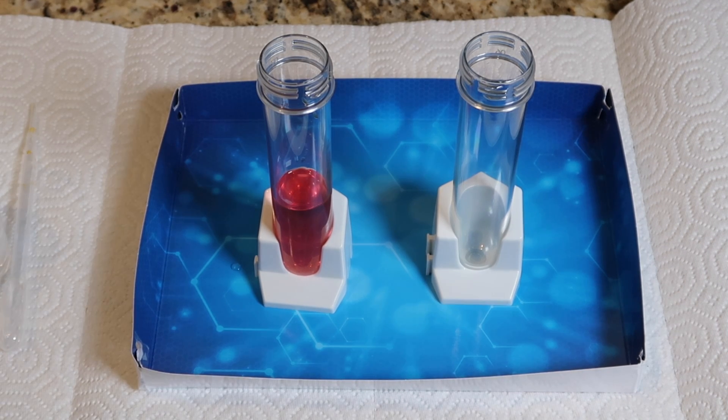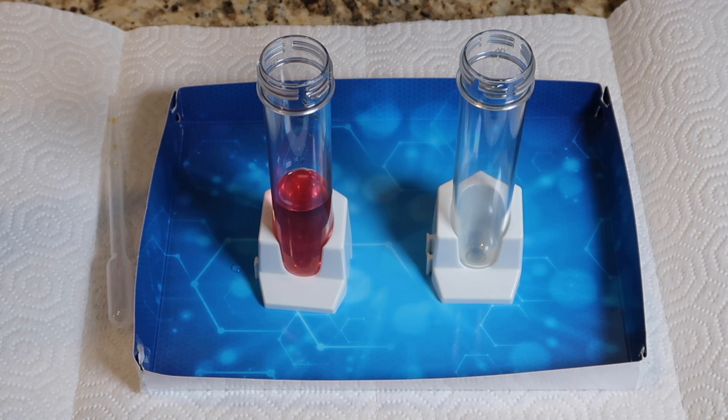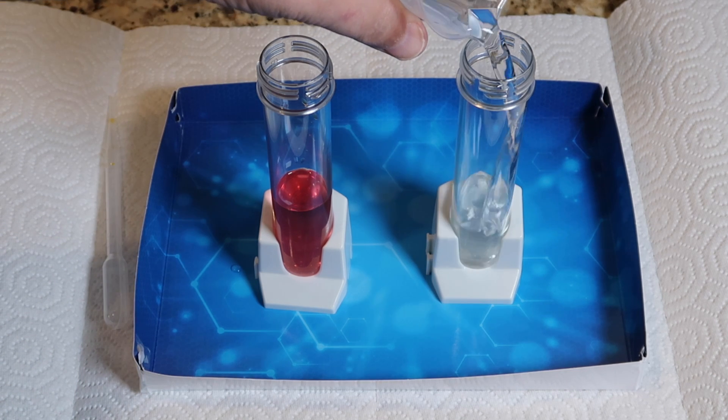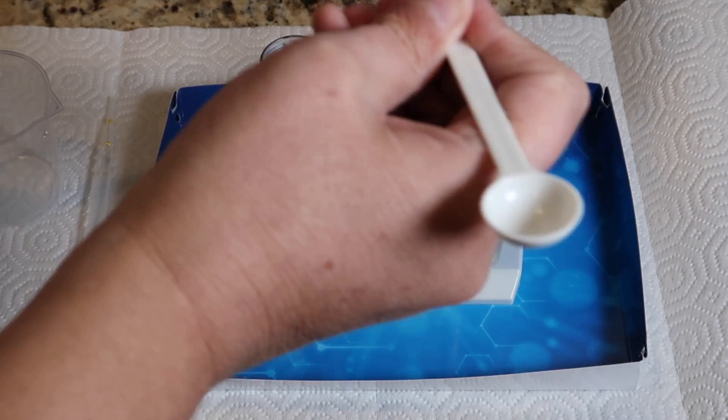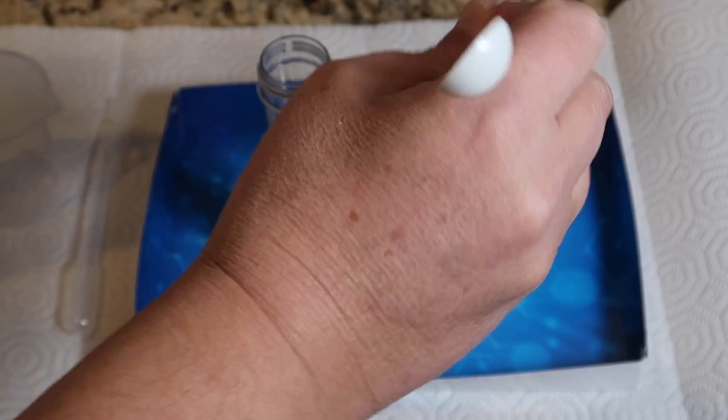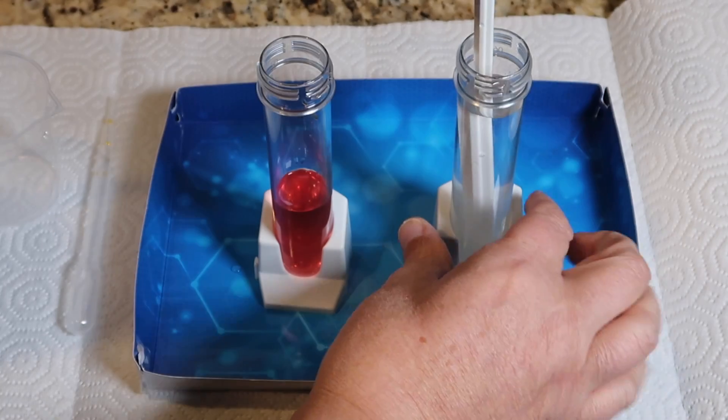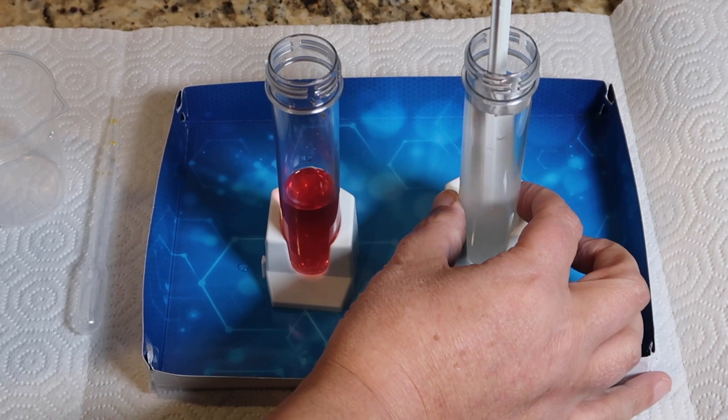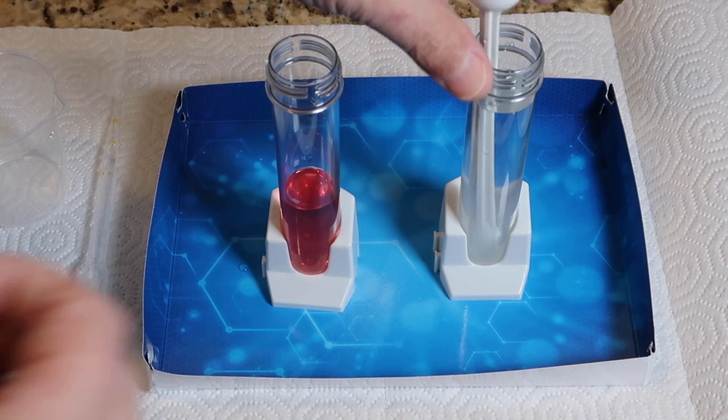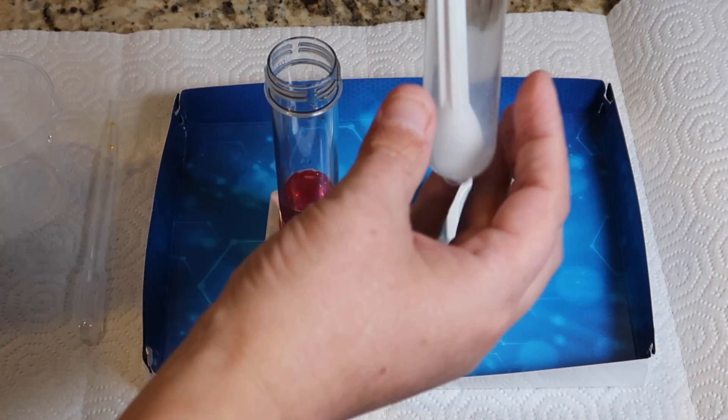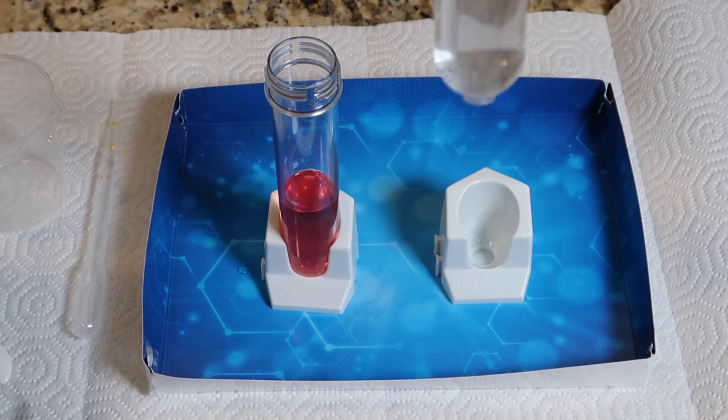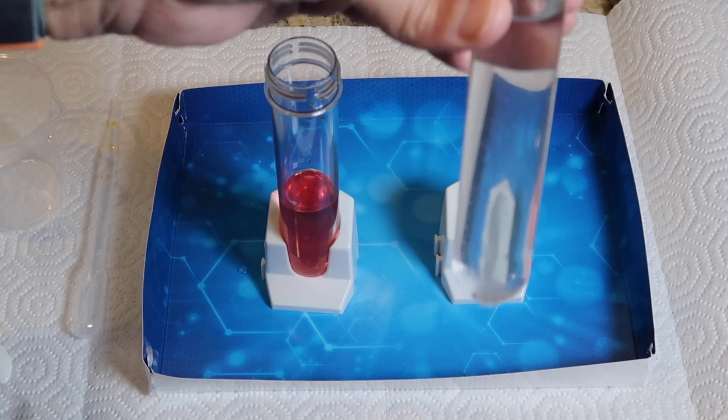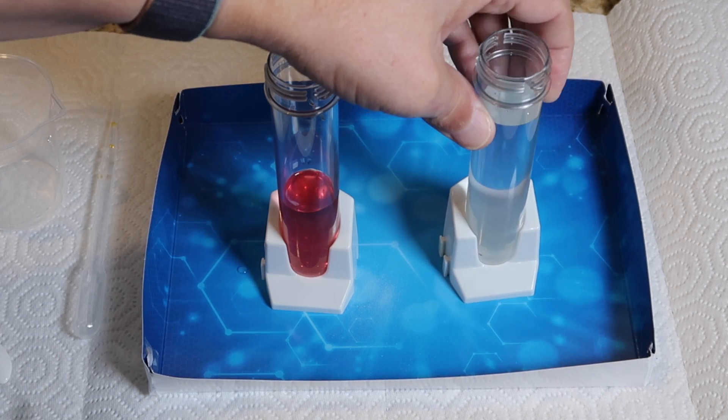Then into the second test tube, we're going to put 50 milliliters of water, into which we're going to stir two medium scoops of baking soda. And we're going to stir until it's dissolved in solution. I think that's pretty much in solution.